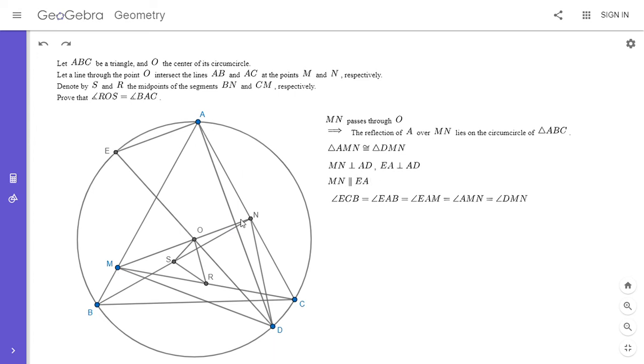And angle AMN is by symmetry equal to angle DMN, since D is the reflection of A over MN.